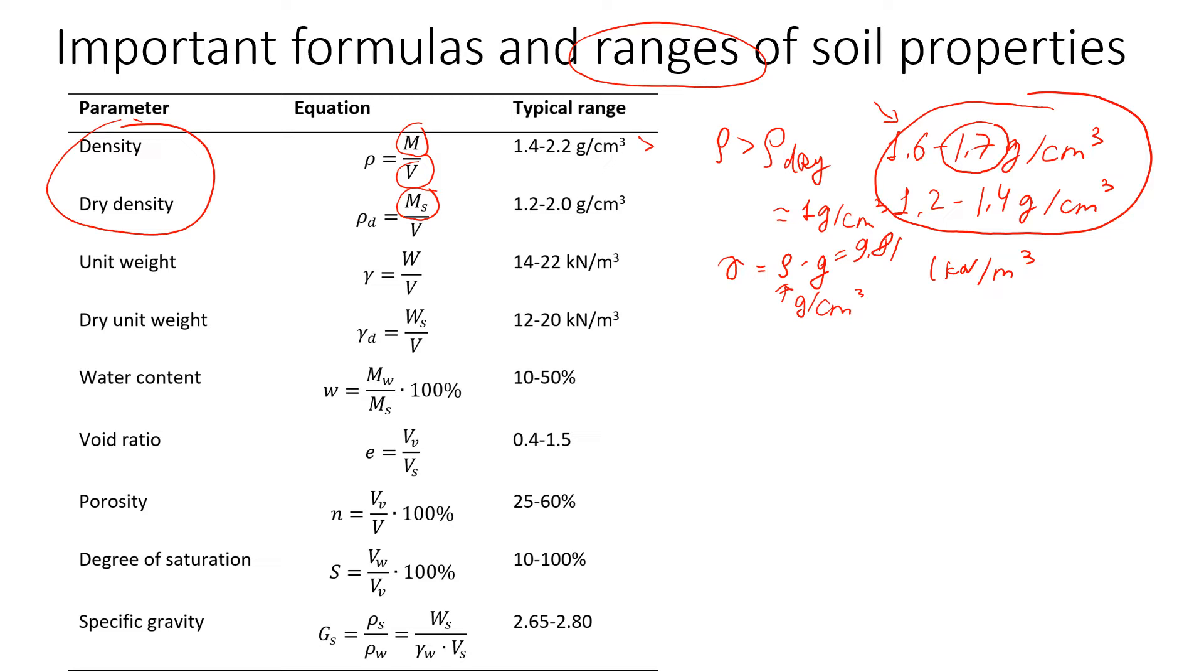A common range for soil will be around 17 kilonewtons per cubic meter. If the soil is on the dry side, maybe you can even have about 15 to 16. If it's loose, that would be this range, even smaller. If the soil is saturated, it can actually get even close to 20 kilonewtons per cubic meter. But this is a very high value, typically when the soil is compacted and very dense.